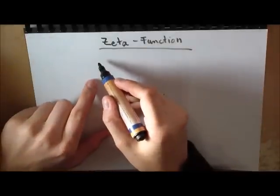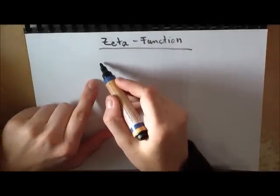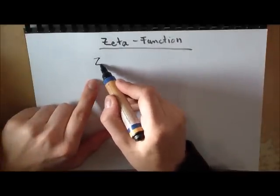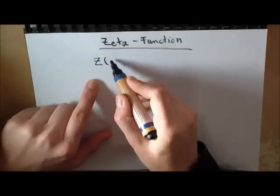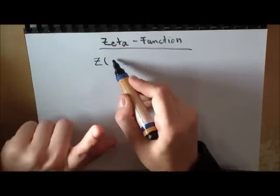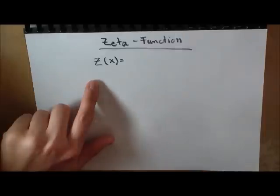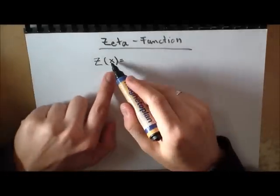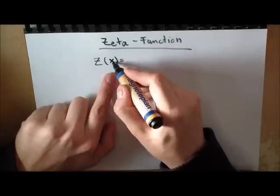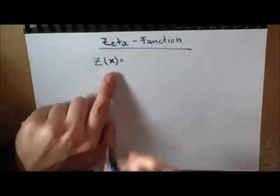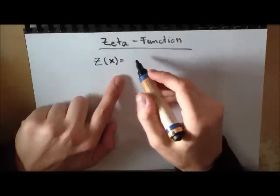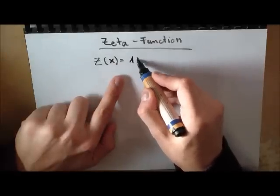What Euler did actually was look at—I will just denote this with Z. Z of X—I will now only use Z of X, which means it's a real number. So Euler only studied this function with real numbers, and actually it looks like this.